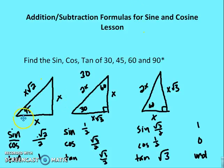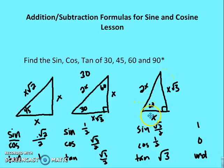In a 45-45-90 triangle, sine and cosine are both √2/2, and tangent is 1. In a 30-60-90 triangle, sine of 30° is 1/2, cosine is √3/2, and tangent is √3/3. For a 60° angle, sine is √3/2, cosine is 1/2, and tangent is √3. For a 90° angle, sine is 1, cosine is 0, and tangent is undefined.